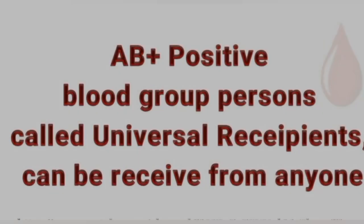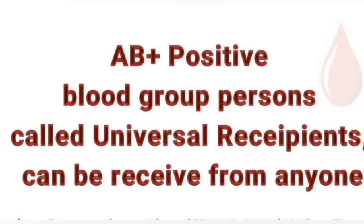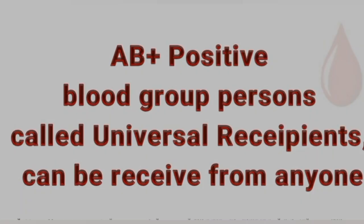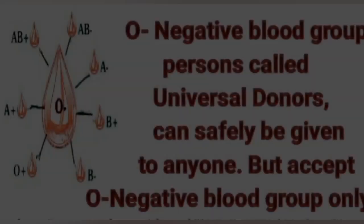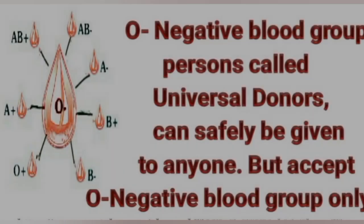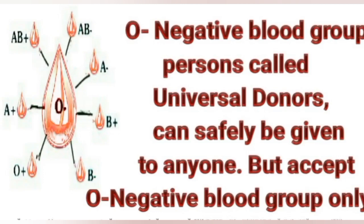AB positive blood group persons are called universal recipients and can receive blood from anyone. O negative blood group persons are called universal donors and can safely give blood to anyone.